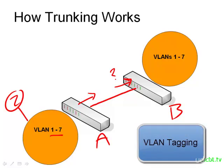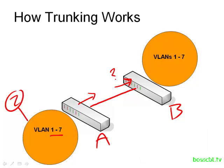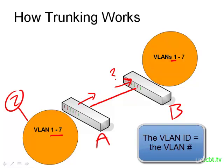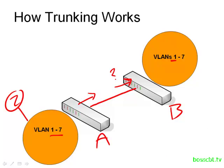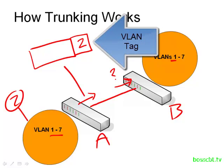That brings us to how trunking actually works, and it's a very simple mechanism — we use something called VLAN tagging. Each VLAN has a VLAN ID, which is simply the number of the VLAN: VLAN 1 has ID 1, VLAN 7 has ID 7, VLAN 5 has ID 5, and so on. We tag that information onto any frames we send across the trunk. Before switch A sends the Ethernet frame, it adds a little bit of extra information to the frame — inside there it puts the VLAN ID — and then it sends it on its way to switch B.